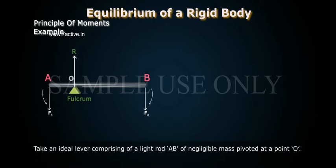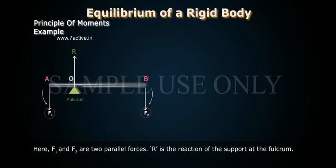Example: Take an ideal lever comprising of light rod AB of negligible mass pivoted at a point O. Here, F1 and F2 are two parallel forces. R is the reaction of the support at the fulcrum.